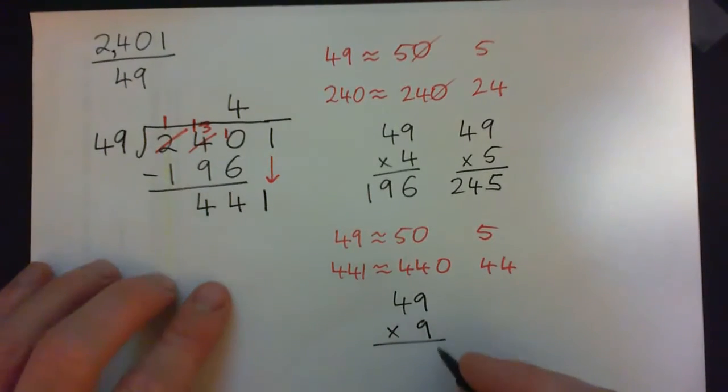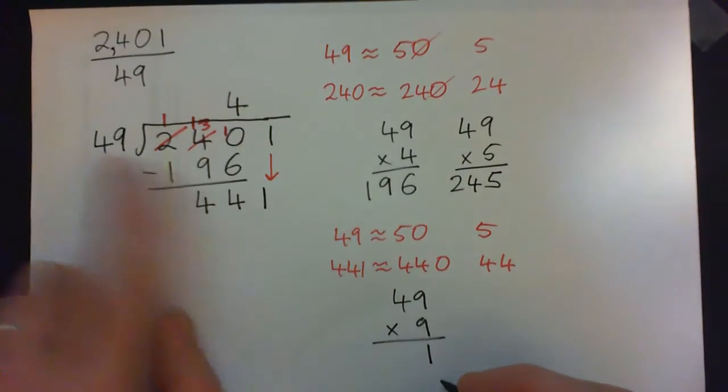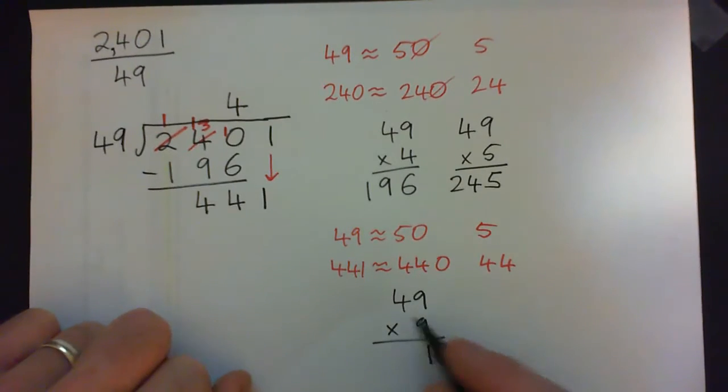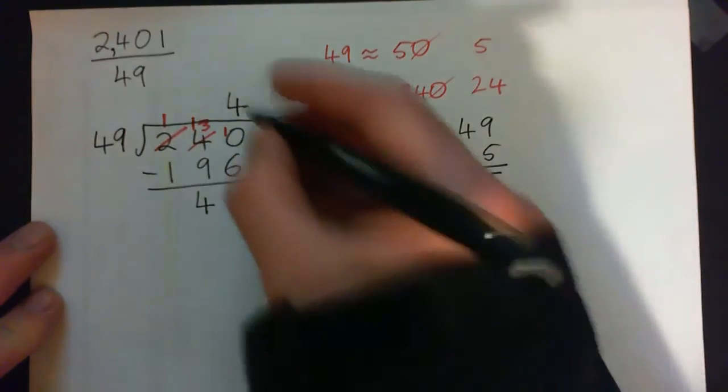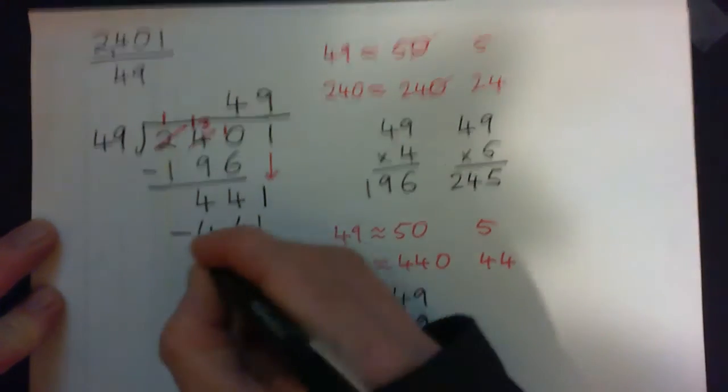So 9 times 49: 9 times 9 is 81, carry the 8. 4 nines is 36, 36 plus 8 is 44. So this is indeed 441. So 9 works. 9 times 49 is 441. Subtract, remainder 0.